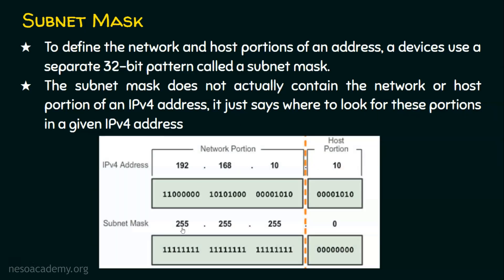For example, if we have a subnet mask of 255.255.255.0, it means the first three octets are the network portion and the last octet is the host portion. This subnet mask is very essential for finding out who are all in our network. Let's see some examples.